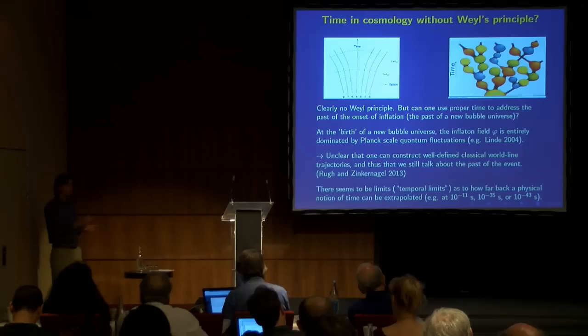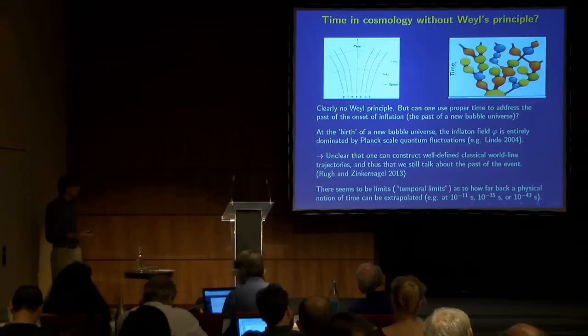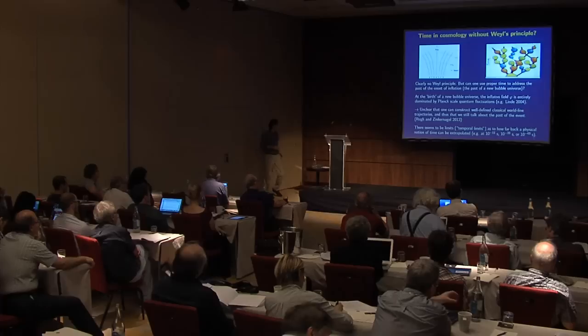So from all this, I gather that there seems to be some limits, some temporal limits, as to how far back a physical notion of time can be extrapolated. And I have at least identified a couple of places where you might look a little more closely to see whether you can actually still go back in time from that point onwards. 10 to the minus 11, no scales. 10 to the minus 35, onset of inflation. Wild quantum fluctuations, very hard to construct good trajectories. And 10 to the minus 43, of course, the Planck-scale. So, with this in mind, with this sort of suggestion for some possible limits of how far we can push our cosmology, I'll turn to my second subject, which is cosmology and aesthetics.